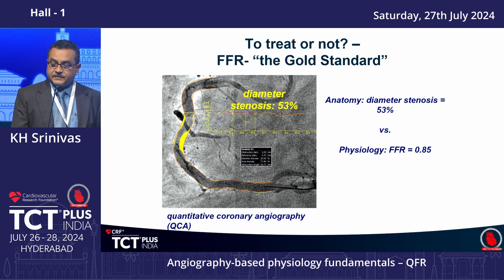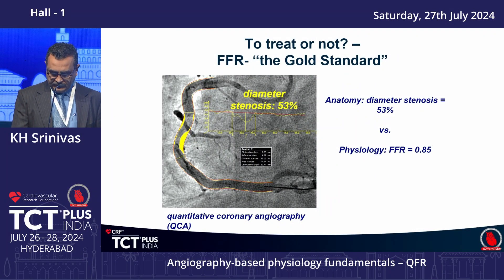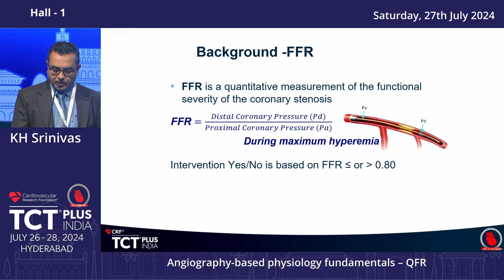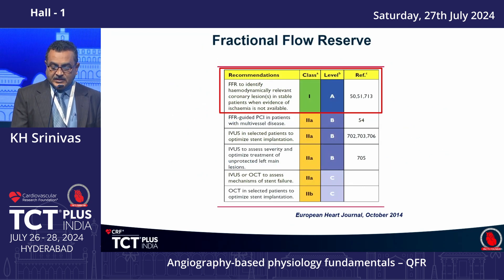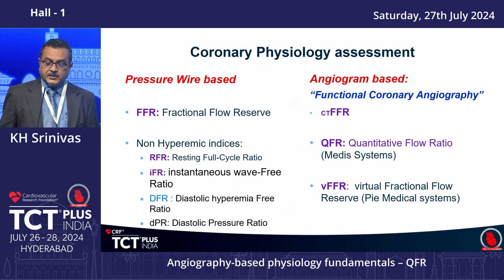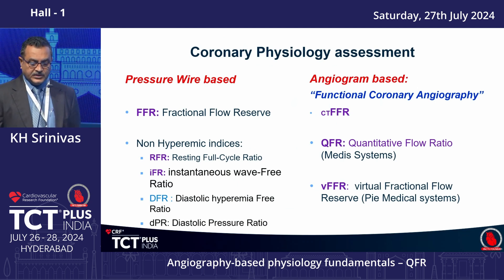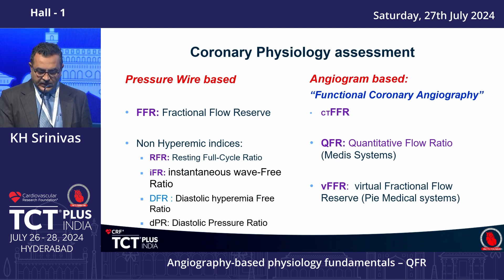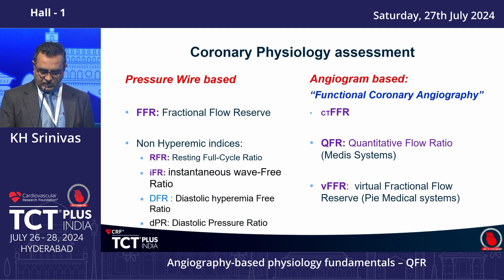FFR has become the gold standard whenever we want to assess an intermediate lesion. The importance of a significant lesion can be arrived at by using FFR performed in a proper manner, and it has been included in the guidelines. Coronary physiology assessment could be pressure wire-based — the commonest one we all use is FFR-based — and the non-hyperemic indices: RFR, IFR, and DFR.